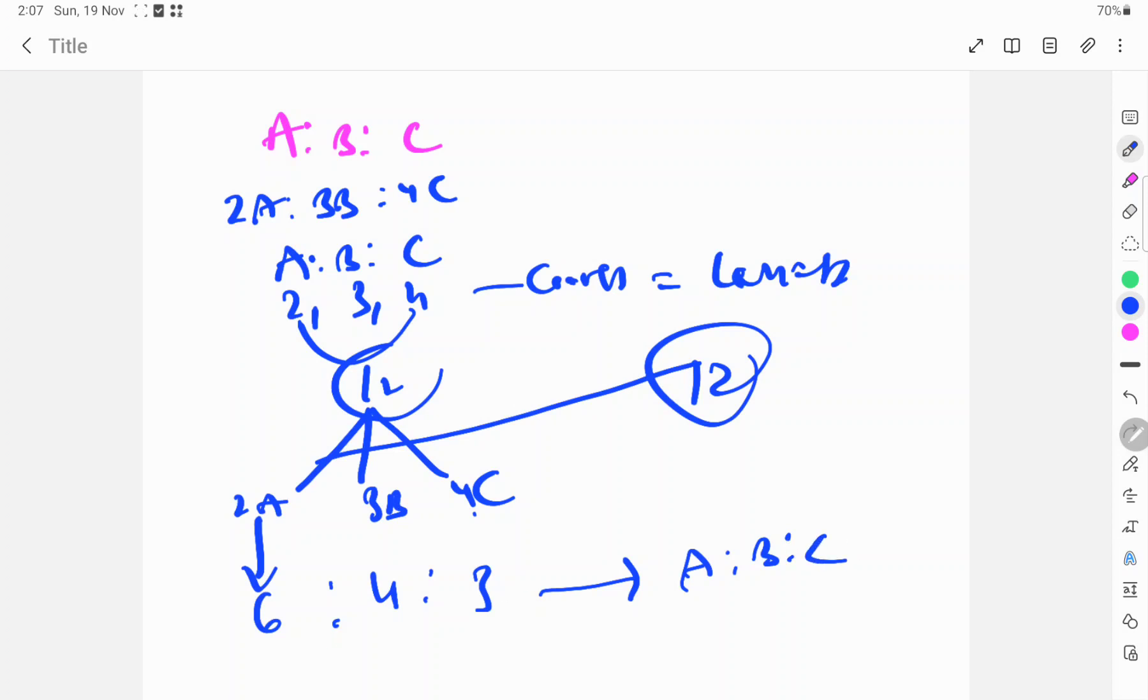To understand the shortcut method: take coefficients 2, 3, 4, calculate LCM which is 12. Second, for 2A, 3B, 4C, determine what multiplied equals 12. 2A needs 6, 3B needs 4, 4C needs 3. So A is to B is to C equals 6 is to 4 is to 3.